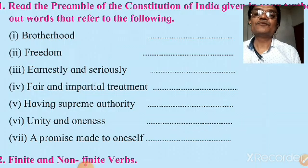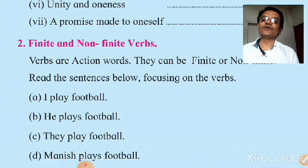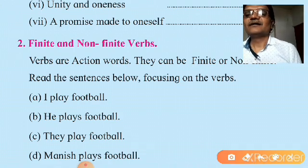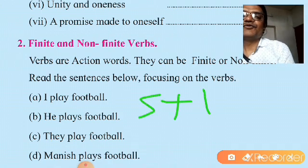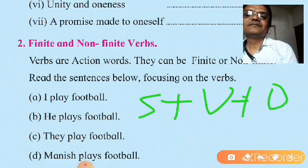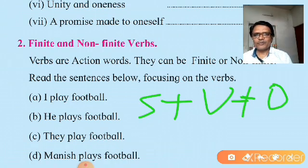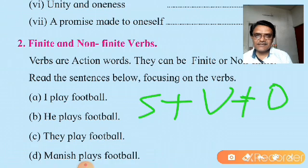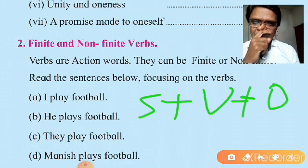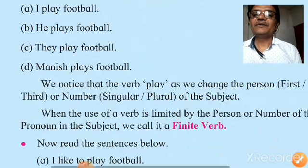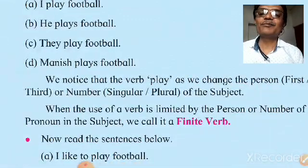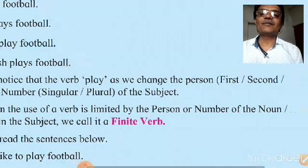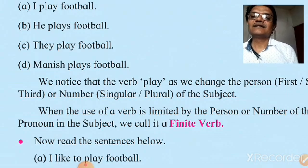Now, finite and non-finite verbs — very easy to understand. The formula is Subject + Verb + Object. For example: I play football, He plays football, They play football, Manish plays football. When the use of a verb is limited by the person or number of the noun or pronoun acting as the subject, it is called a finite verb.